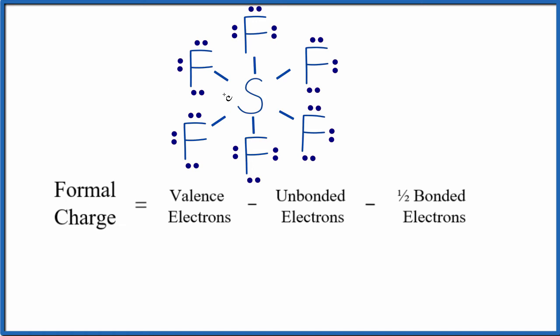Let's start by calculating the formal charges on the fluorine here. For fluorine, we have seven valence electrons—it's in group 17 or 7A. Unbonded valence electrons: it has two, four, and six.